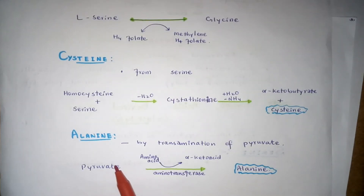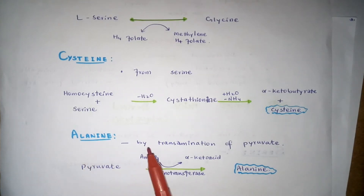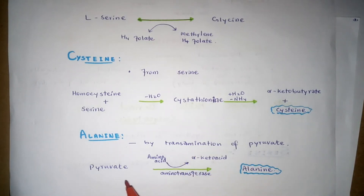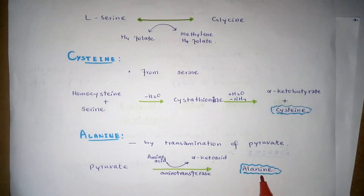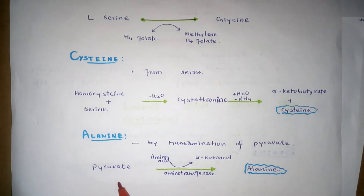The last amino acid that can be formed from the intermediates of glycolysis is alanine. Alanine can be derived by the transamination of pyruvate — produced by the reductive amination of pyruvate. The amino acid is transformed to alpha-keto acids; the aminotransferase catalyzes this reaction. This reaction is critical for the glucose-alanine cycle in human beings.